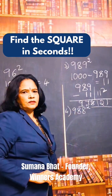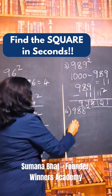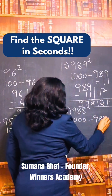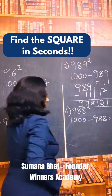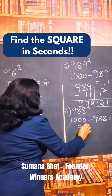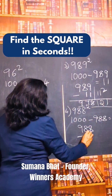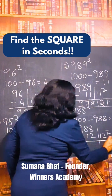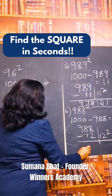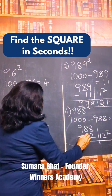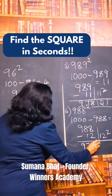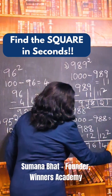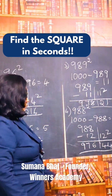Let us find the square of 988. The base is 1000. 1000 minus 988 — the difference is 12. So 988 minus 12 is 976, and 12 squared is 144. The answer is 976144.